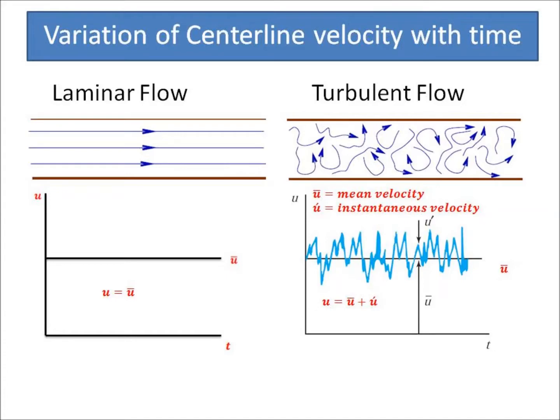Before going for the velocity profile of turbulent flow, we must look for the variation in centerline velocity of both laminar and turbulent flow. In laminar flow figure we can see that the flow occurs along streamline and in layers, hence the centerline velocity variation is negligible with time. The velocity at centerline is always the average or mean velocity.